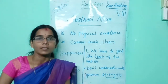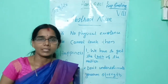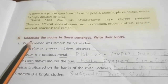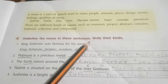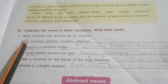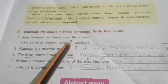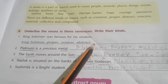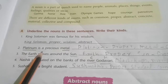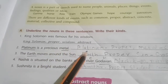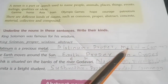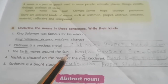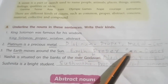Now we must do the exercise from your grammar text. Take your grammar text. Underline the nouns in these sentences and write their kinds. First: 'King Solomon was famous for his wisdom.' King Solomon — proper noun; wisdom — abstract noun. Second: 'Platinum is a precious metal.' Platinum — proper noun; metal — common noun. Third: 'The earth moves around the sun.' Earth — proper noun; sun — proper noun.